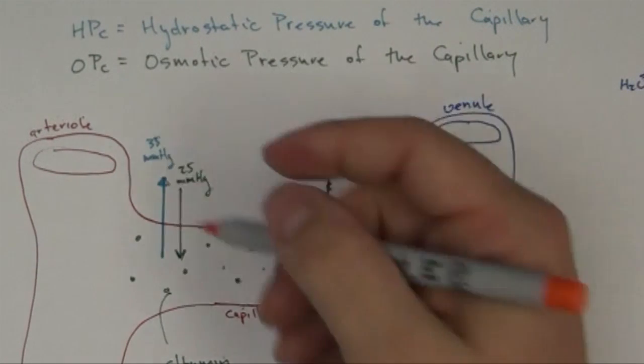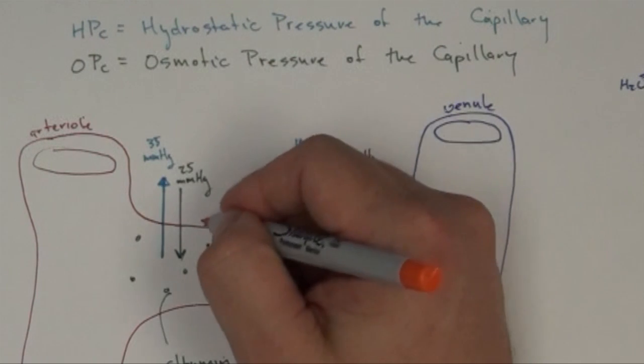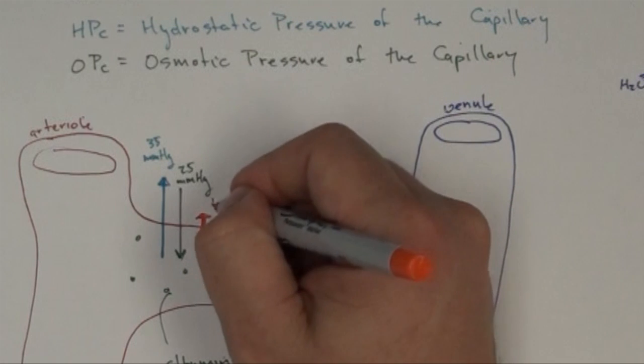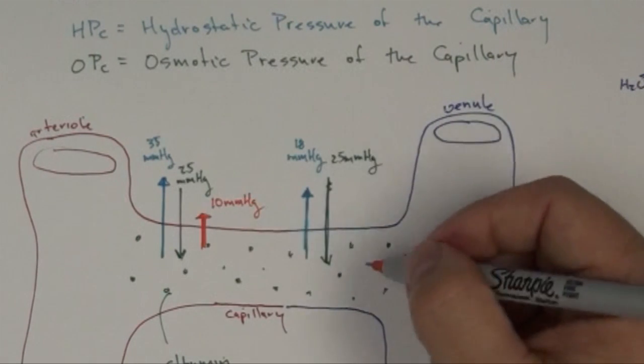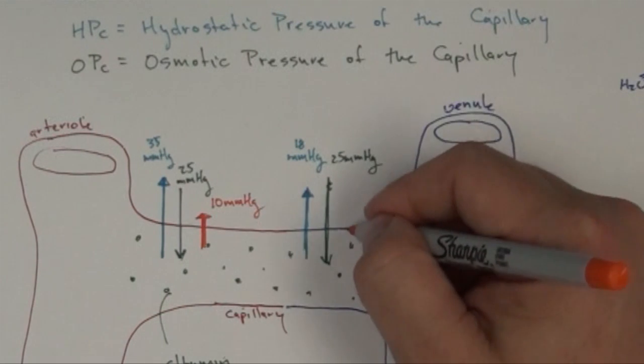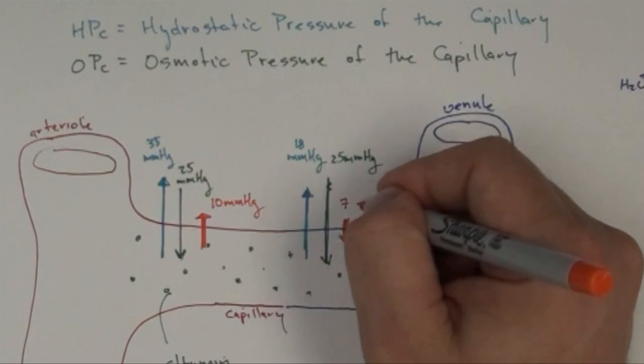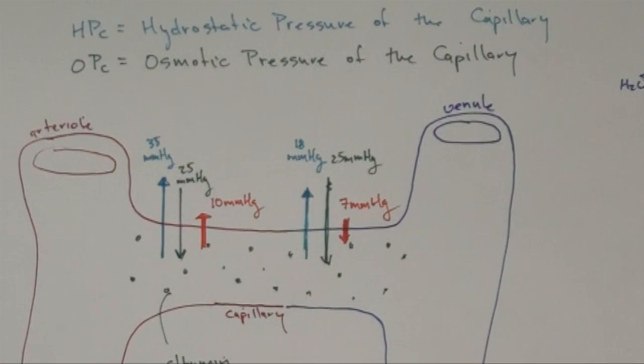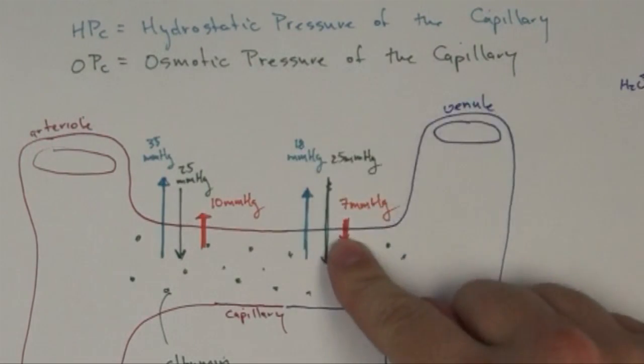Now you might be doing the math already and you notice that I'm pushing out at 35 and pulling back in at 25, so that's a net out of 10 millimeters of mercury. Over here, the math is a little bit different. I'm pushing out at 18 and still pulling in at 25, so my arrow changes direction. I'm pushing back in at 7 millimeters of mercury. And so at one end, I can push fluid out of the capillary. At the other end, I'm drawing it back in.